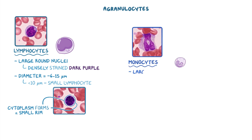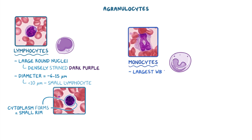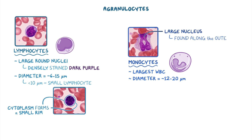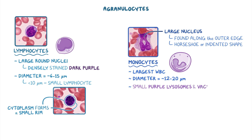Monocytes are the largest type of white blood cell, with a diameter that ranges from 12-20 micrometers. They have a large nucleus that's usually found along the outer edge with a horseshoe or indented shape. Monocytes also have small purple lysosomes and vacuoles in the cytoplasm that give the cells a frosted glass appearance.